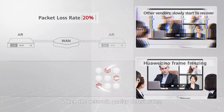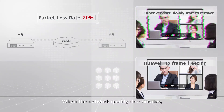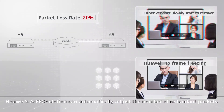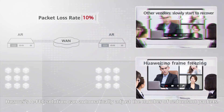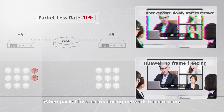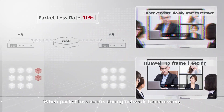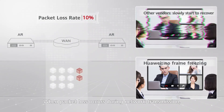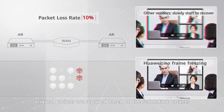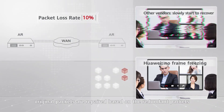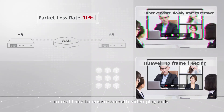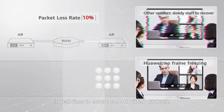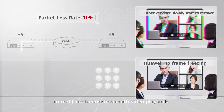When the network quality deteriorates, Huawei's FEC solution can automatically adjust the number of redundant packets when packet loss occurs during network transmission. Original packets are repaired based on the redundant packets in real time to ensure smooth video playback.